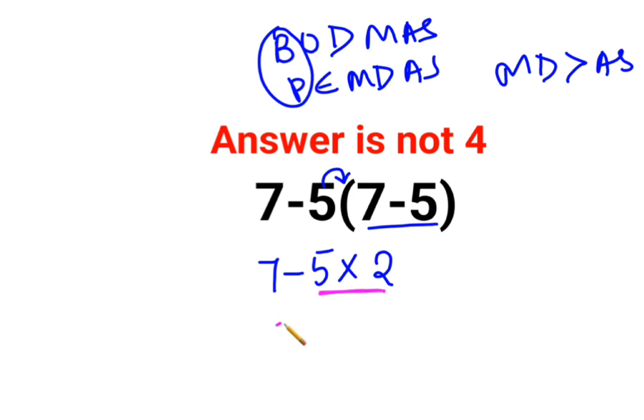So we'll keep seven as it is. Minus five multiplied by two is what? Minus ten.